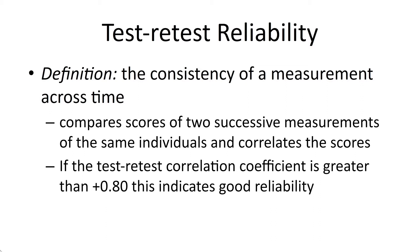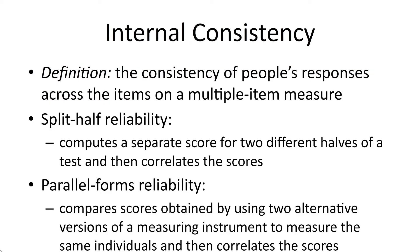Typically, if we get very similar scores — like a Pearson's R correlation coefficient of greater than 0.8 — that would indicate a good amount of reliability. There are other ways to measure reliability, such as internal consistency, which is the consistency of an individual's responses across multiple items on a multi-item measure.